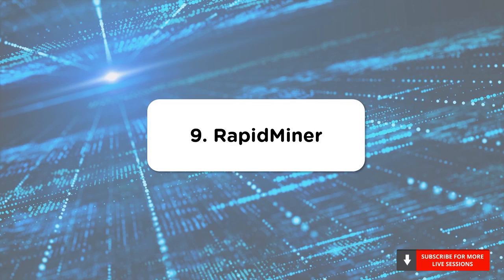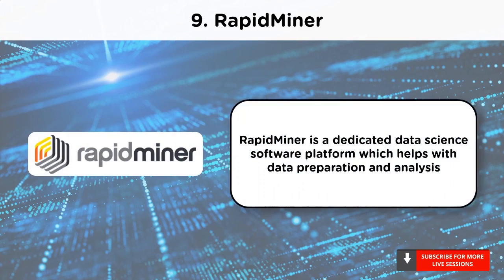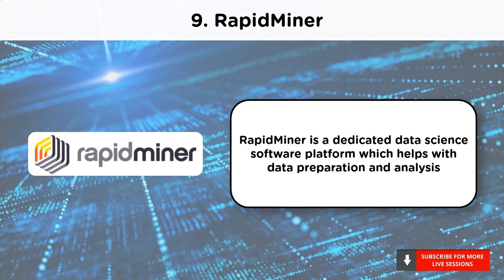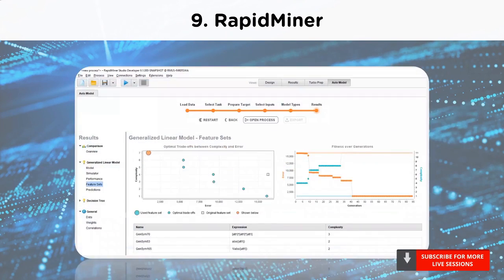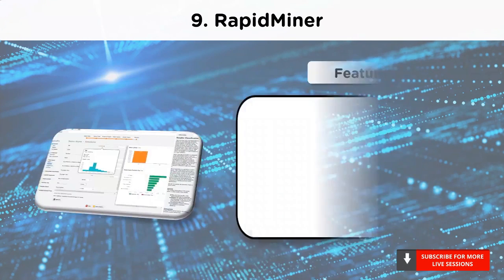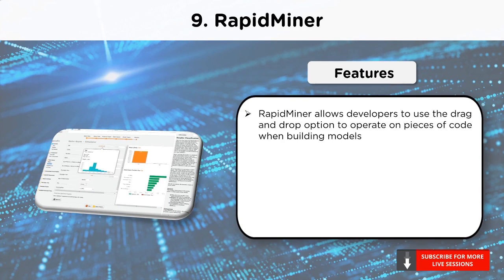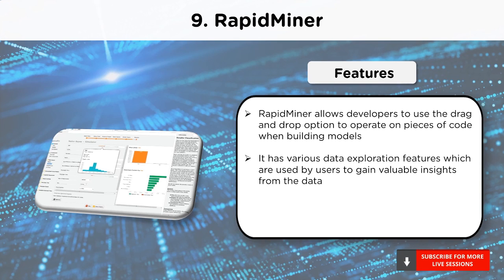Moving on to our next data analysis tool, at number 9 we have RapidMiner. A data science software platform, RapidMiner provides an integrated environment for data preparation, analysis, machine learning and deep learning. It is used in almost every business and commercial sector. RapidMiner also supports all the steps of the machine learning process. RapidMiner allows the usage of any data and it also gives an opportunity to create models which are used as a basis for decision making and formulation of strategies.